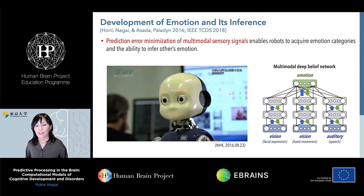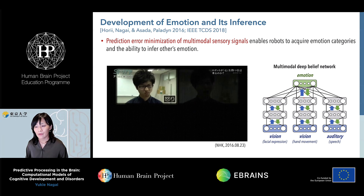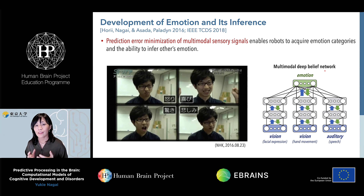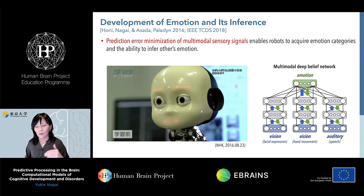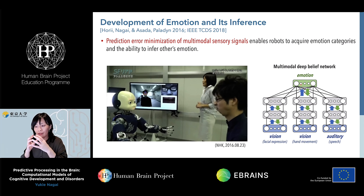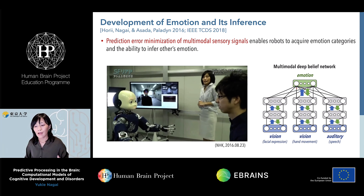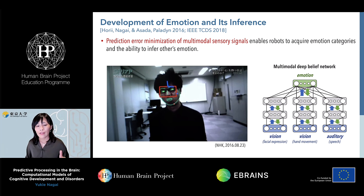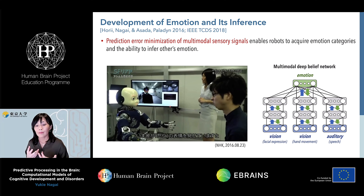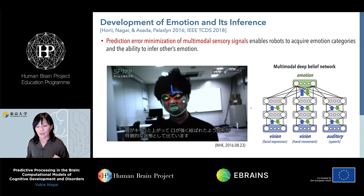Another example is emotion estimation. We designed a similar network using a multimodal deep belief network, very similar to the deep autoencoder. This layered network first receives multimodal signals as input from the bottom, then goes to the top to acquire an abstract representation, and then these higher-level representations are used to predict the original low-level signals. Using this model, we examined whether the robot can estimate a person's emotional state and also imitate it by utilizing the reconstructed sensory signal.